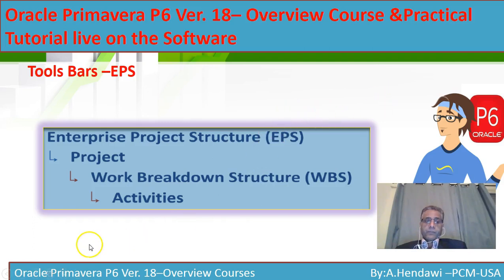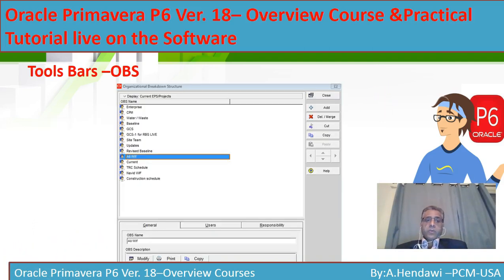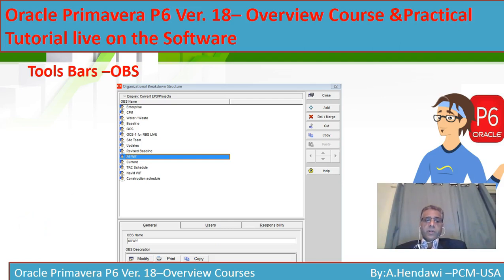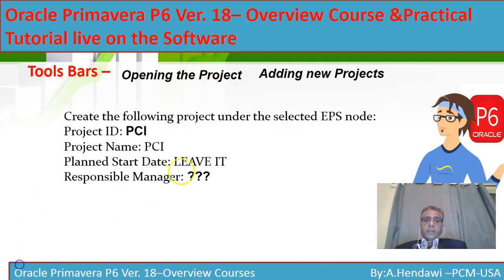After EPS, the second level is the WBS, and after that you have the activities. The OBS — Organizational Breakdown Structure — is where you add your staffing from the top manager down to the foreman and all staff. This is very important because we're going to assign responsibility for activities so that everyone on site will be responsible for their own activity.